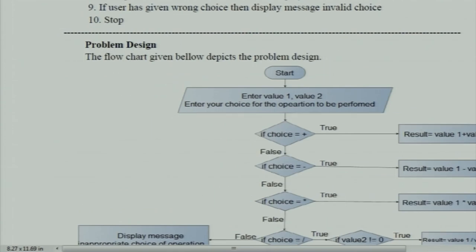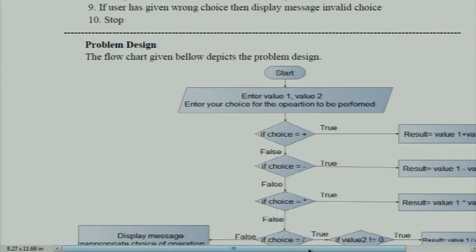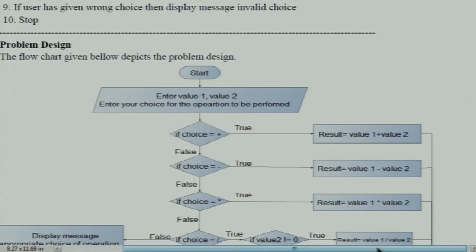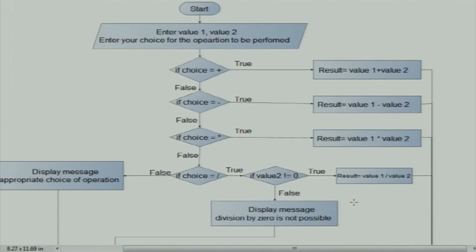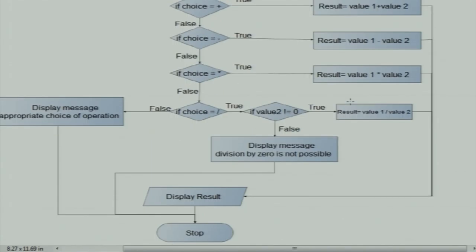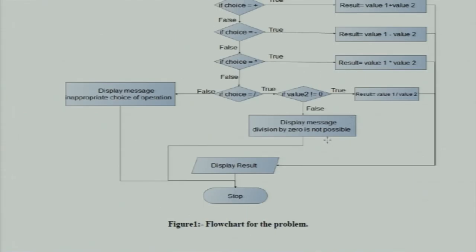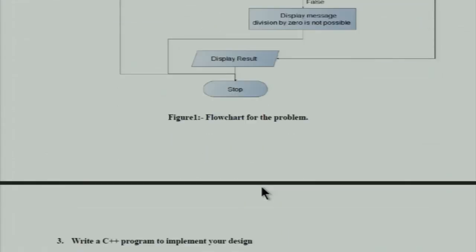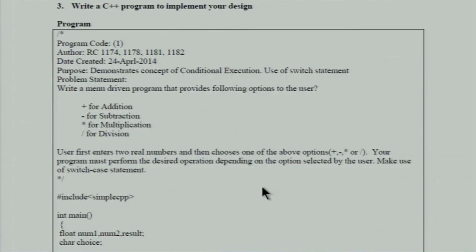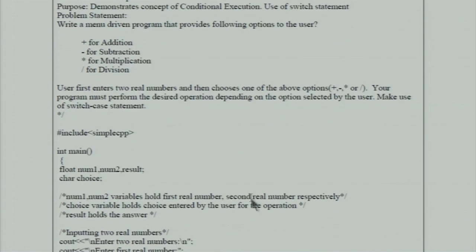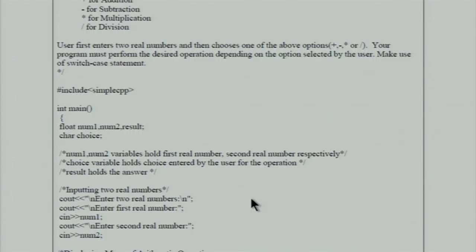We have also made a flowchart. Start, then enter value one and two. After that, four choices are given — true and false paths lead to results. The complete flowchart ends with displaying result and stop. If any error occurs, display a message; if divided-by-zero error occurs, display that this is zero.